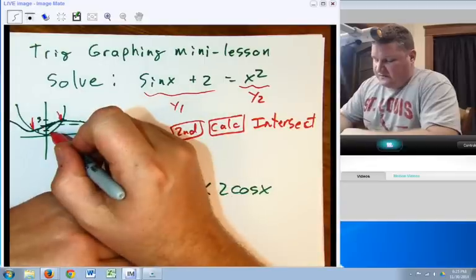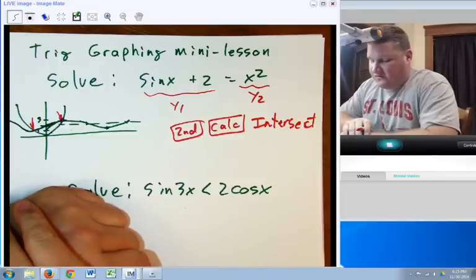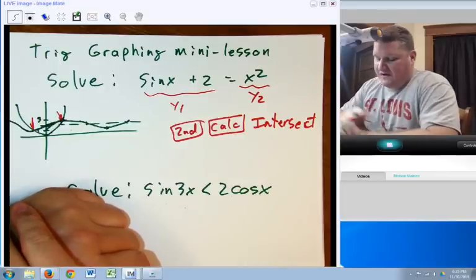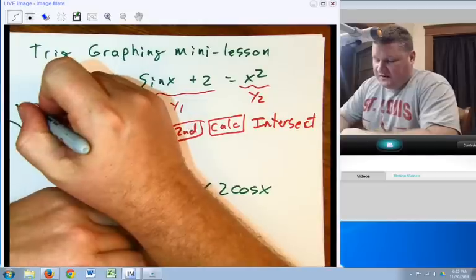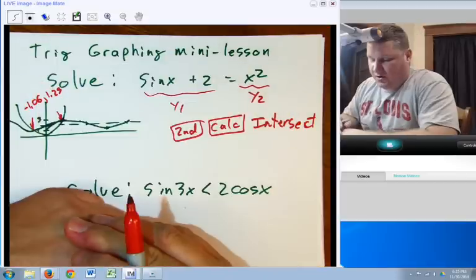Now, that will allow us to choose one equation, the other equation, and then guess where we think the intersection is, and it will give us two values. This one turns out to be at about negative 1.06 comma 1.25-ish, somewhere in that ballpark.